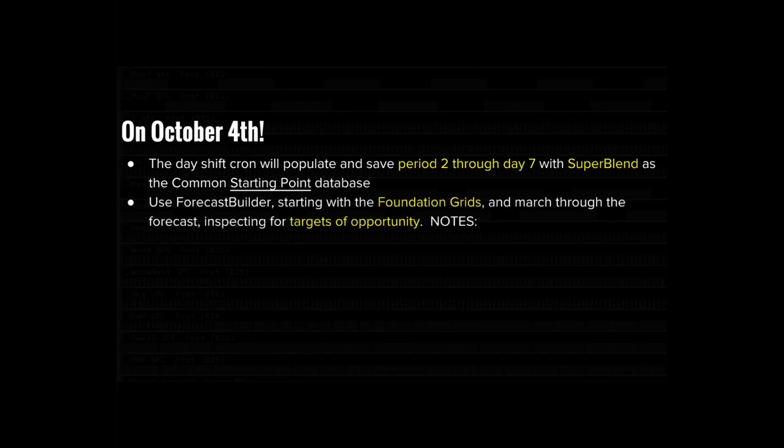On October 4th, the day shift cron — not the mid shift — will populate and save period two through day seven with super blend as the common starting point database. Again, it's a starting point, not an end point — forecasters can change that, they don't have to go on autopilot mode. Then using the Forecast Builder GUI, starting with the foundation grids, march through the forecast and inspect for targets of opportunity.